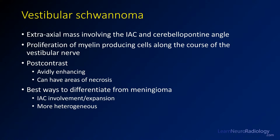In this case what we're looking at is a vestibular schwannoma. This is an extra-axial mass of the cerebellopontine angle involving the internal auditory canal (IAC). These are tumors arising from the myelin-producing cells, most commonly along the vestibular nerve. On post-contrast imaging you tend to have avidly enhancing lesions — sometimes with areas of necrosis. The best way to differentiate these from a meningioma is involvement and expansion of the IAC. They also tend to be slightly more heterogeneous than meningiomas, although that's not a reliable sign.